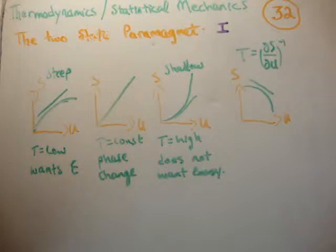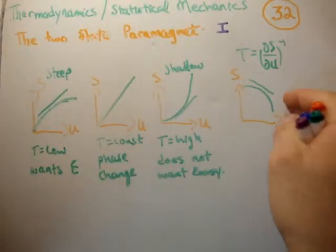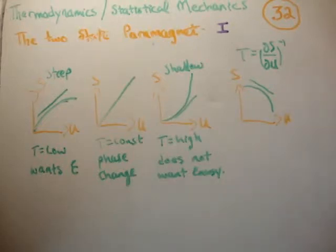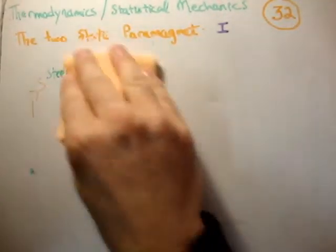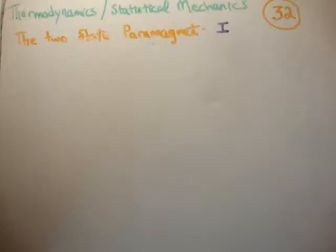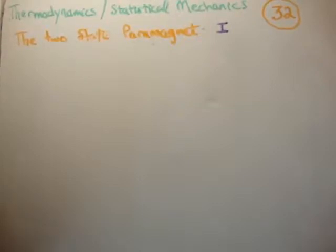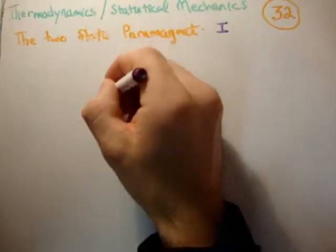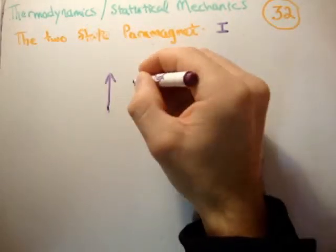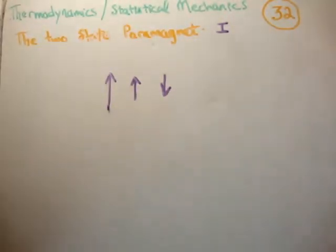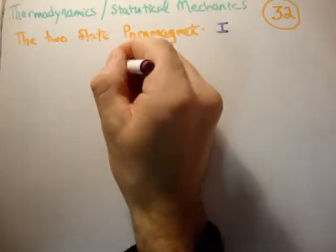Finally, a system with a negative slope in its entropy versus energy graph will have a negative heat capacity, and that is perfectly acceptable. We'll see soon that this is the case for the two-state paramagnet. Now, for the physics of a two-state paramagnet: we have magnetic dipoles which, in the presence of a magnetic field, can either point up or down — analogous to spin up or spin down.